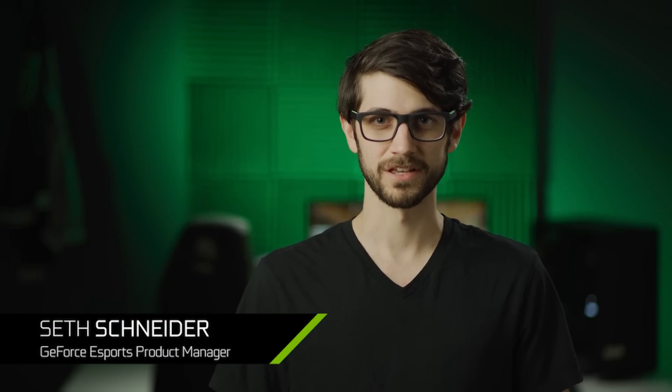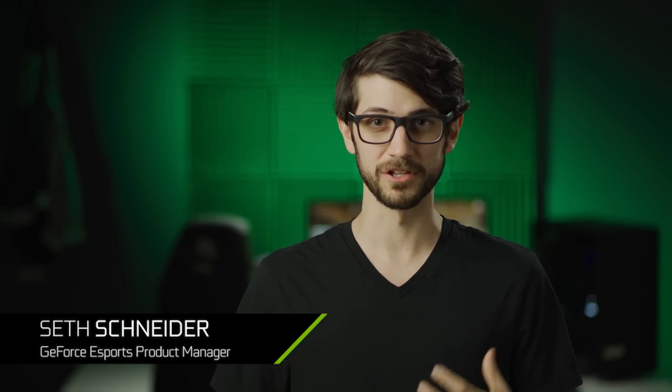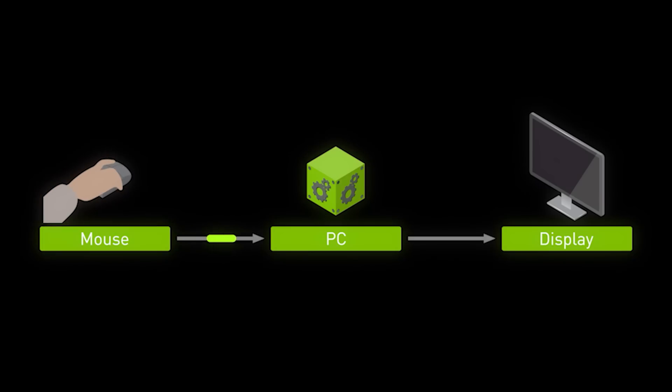Hi, I'm Seth from NVIDIA, and today we're going to be looking at some common gamer myths and pain points and using system latency to explain what's really going on. System latency is the time from when your mouse button is clicked to when the resulting pixels appear on screen. We're going to be looking at high latency, medium latency, and low latency systems together with CSGO Legend and Valorant streamer Jordan Nothing Gilbert, as well as a high-speed camera to see what's really going on.